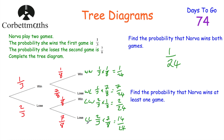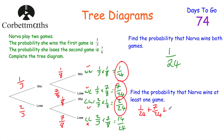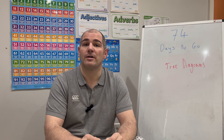The next question asks for the probability that Nova wins at least one game. Losing both doesn't count, but win-lose (7/24), lose-win (2/24), and win-win (1/24) all count. So we add: 1/24 + 7/24 + 2/24 = 10/24, which simplifies to 5/12. The probability of Nova winning at least one game is 5/12.